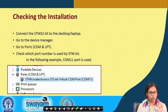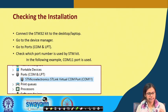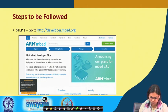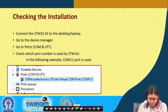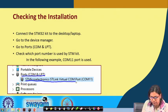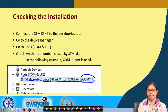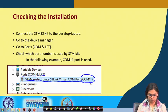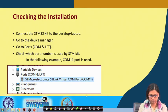Next, check the installation. Once you have made the driver installation, connect the STM32 kit to the desktop or laptop using the connector mentioned earlier. Go to Device Manager, then to Ports (COM and LPT). You will see something like 'STMicroelectronics ST-Link Virtual COM Port' — for example COM11, though the port number could be 7, 8, 9, or any other. Once the driver is correctly installed, this entry will be shown there.